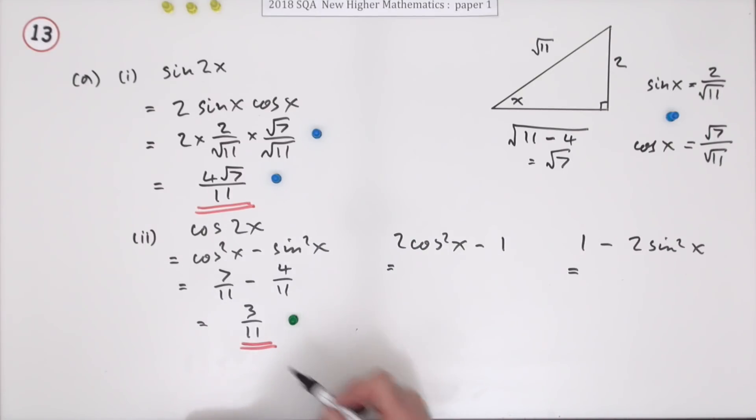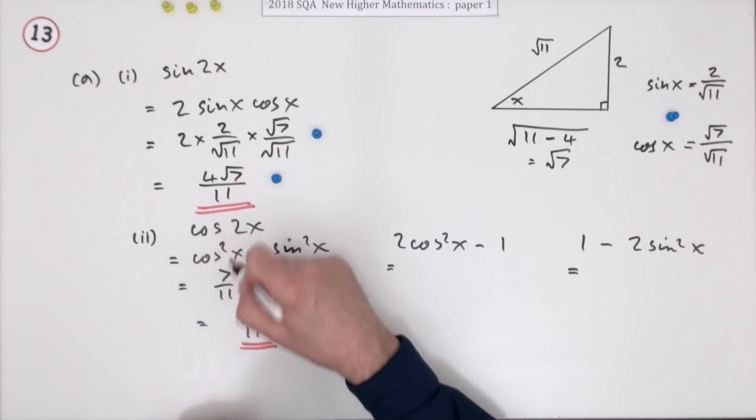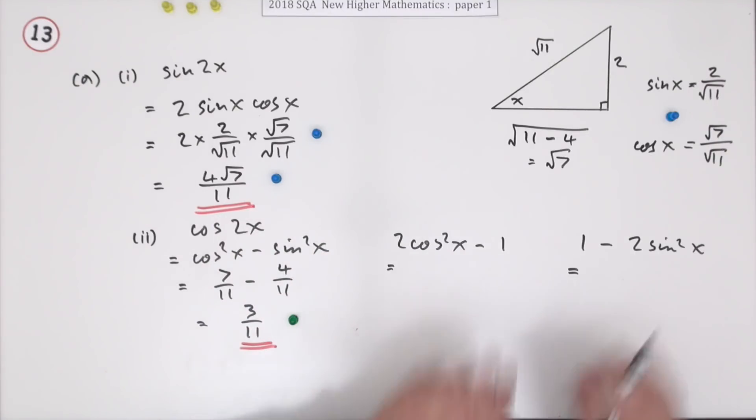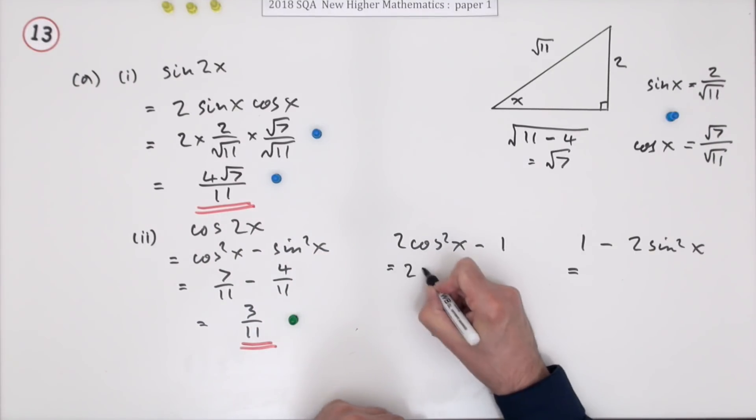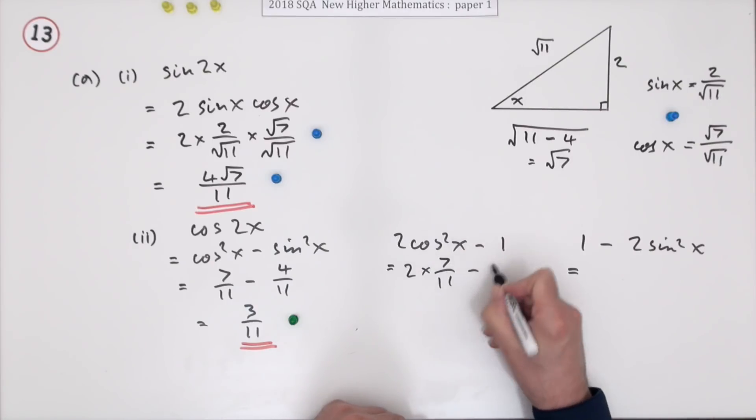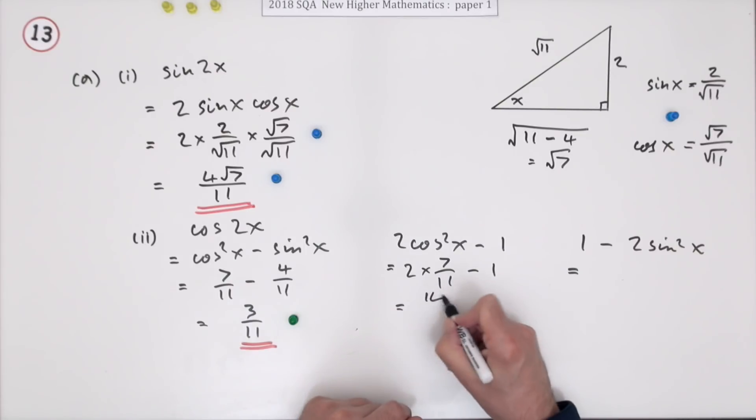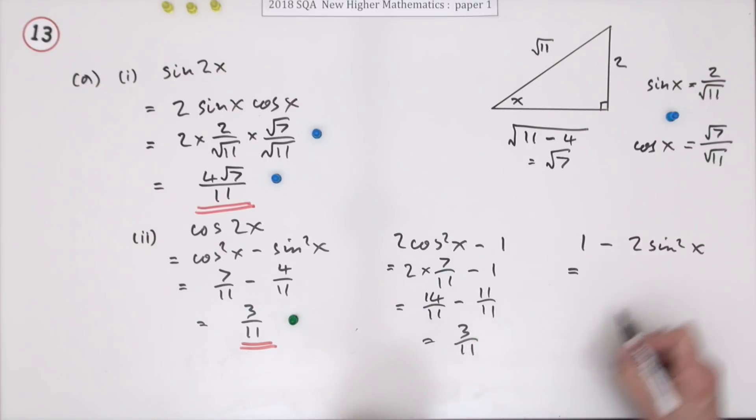You can show the intermediate working if you wanted: bracket root 7 over root 11 all squared, and these two are the same. 2 times 7 over 11 minus 1, that's 14/11 minus 11/11, which is 3/11. And same with this: 1 minus 2 times 4 over 11, that's 11/11 minus 8/11, which of course is 3/11. They're all the same.